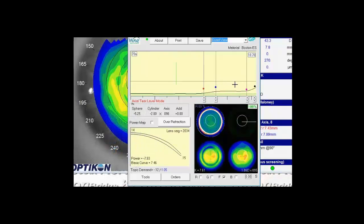And if we're dealing with edge lift, we want to decrease edge lift. We can drag the pink dot down. And conversely, if the edge looked tight, we can drag the pink dot up. And that's how we can control and adjust the back curvature of the contact lens.